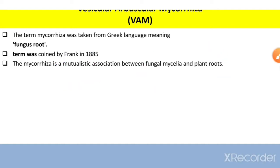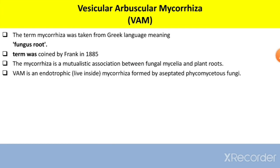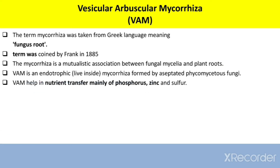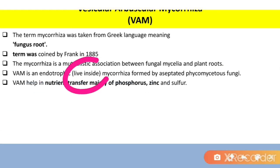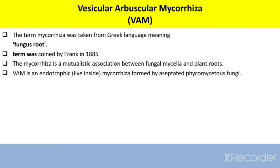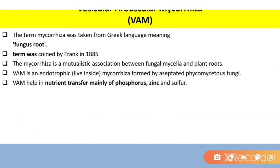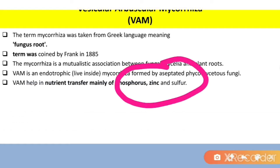VAM is an endophytic mycorrhiza found in accepted Phycomycetes fungi. Endotrophic means it lives inside the plant. VAM helps with nutrient transfer, mainly phosphorus, zinc, and sulfur.